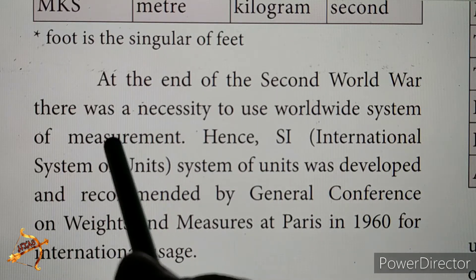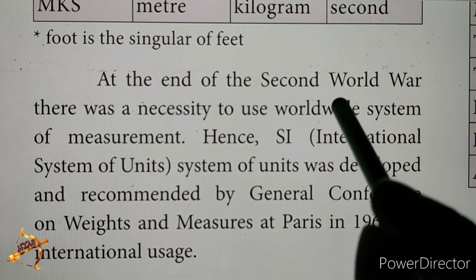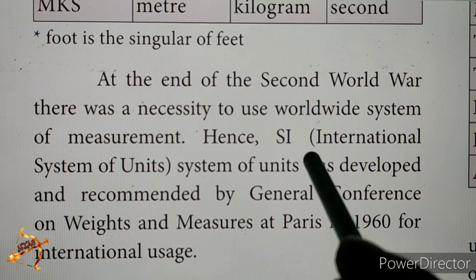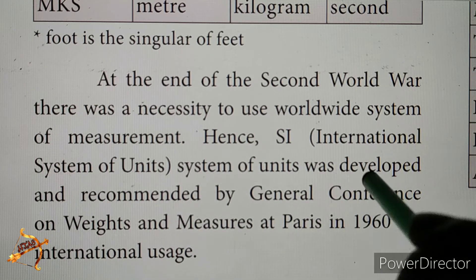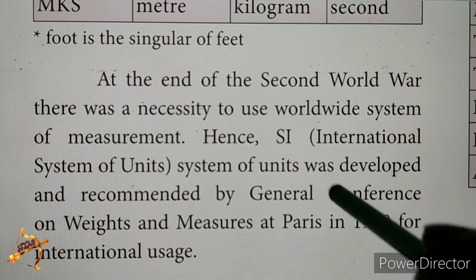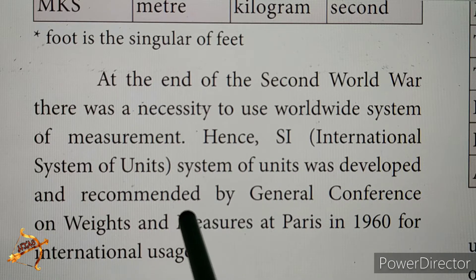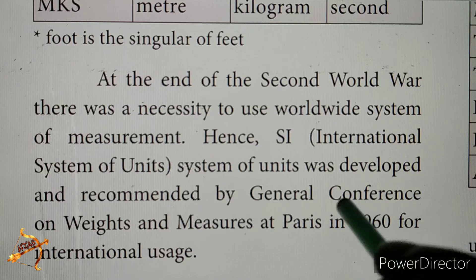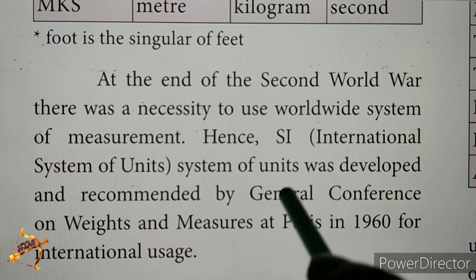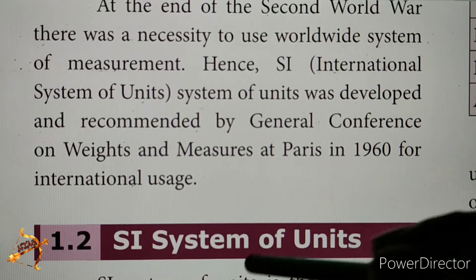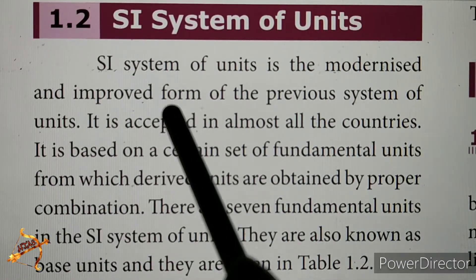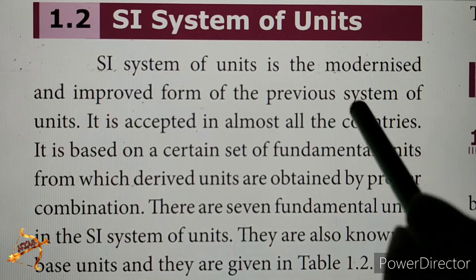At the end of the Second World War, there was a necessity to use a worldwide system of measurement. Hence, the SI system of units was developed and recommended by the General Conference on Weights and Measures at Paris in 1960 for international usage. The SI system of units is the modernized and improved form of the previous system of units.